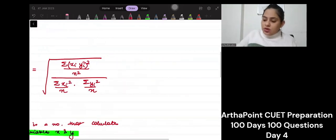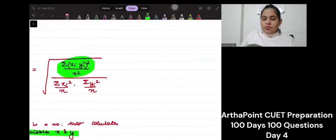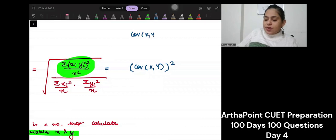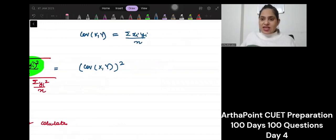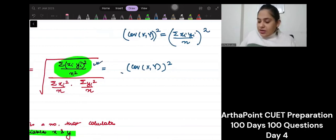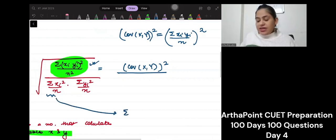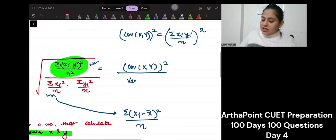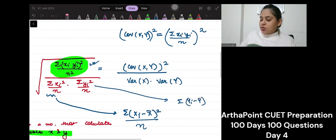Right? And so actually, this part is nothing but covariance of x, y whole squared. Because covariance of x, y is summation xi yi by n. So if I were to square the covariance of x, y, I get the numerator. And this is nothing but the variance of x. Because this is in the deviation format - it's summation xi minus x bar whole square by n. So this is the variance of x. Variance of y is summation yi minus y bar whole square by n.